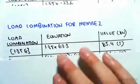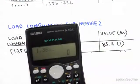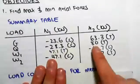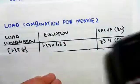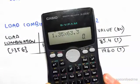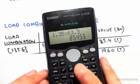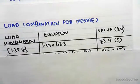We have 1.35G, so it's 1.35 times G, which is 63.3, so times 63.3 gives us 85.4 in tension.